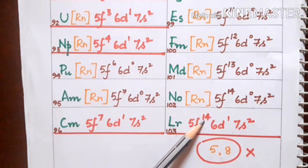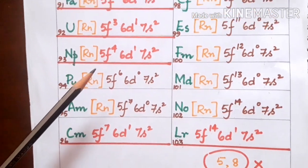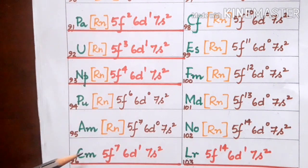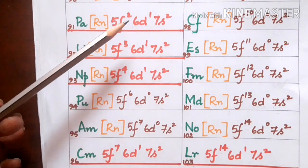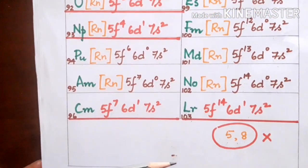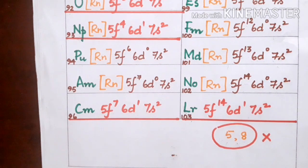Mendelevium has the configuration 5f¹³ 6d⁰ 7s², nobelium 5f¹⁴ 6d⁰ 7s², and lawrencium, the final element, has 5f¹⁴ 6d¹ 7s². On examining actinides, the elements protactinium, uranium, neptunium, curium, and lawrencium have special configurations with d¹. The rest of the actinides do not show d¹ configuration. We also find that configurations with f⁵ and f⁸ are absent in actinides. All this happens because of the difference in the occupancy of f orbitals.